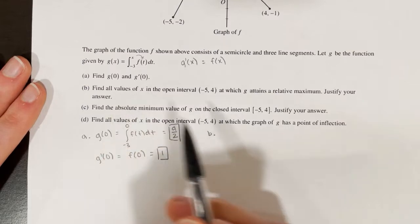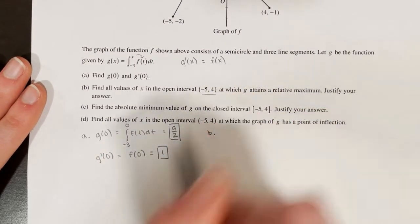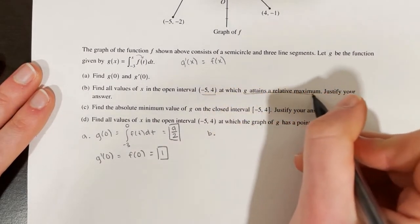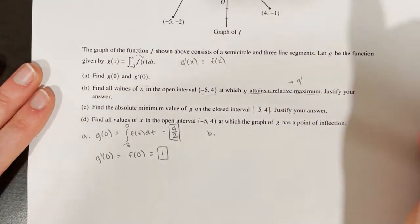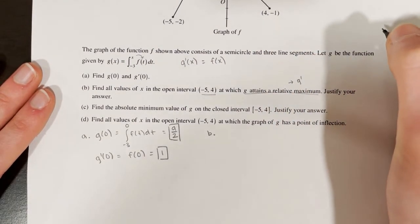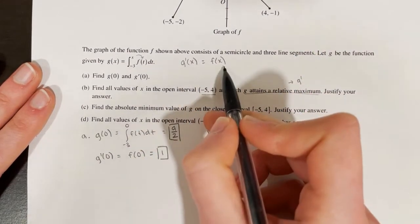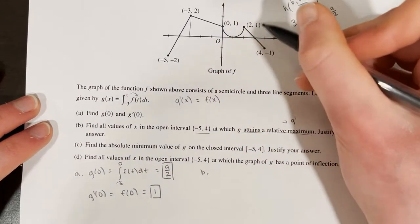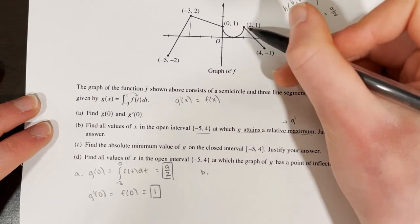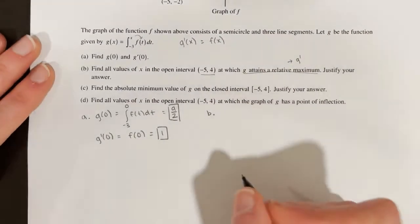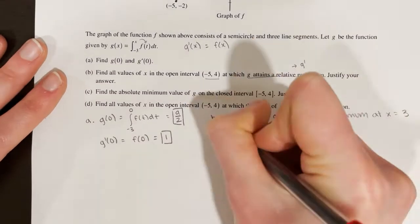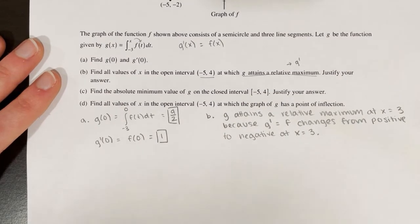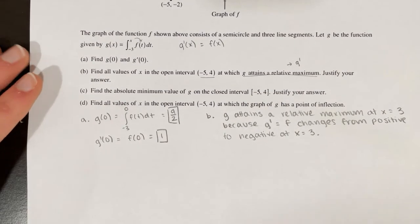Part B says find all values of x on the open interval from negative 5 to 4 at which g attains a relative maximum. g attains a relative maximum when g prime changes from positive to negative. Since g prime equals f, we look for where f changes from positive to negative. That only happens at x equals 3. So g attains a relative maximum at x equals 3 because g prime, which equals f, changes from positive to negative there.